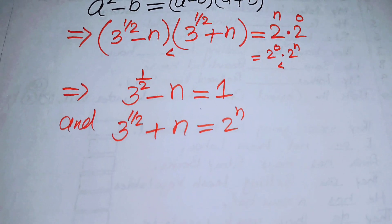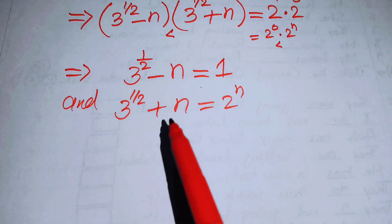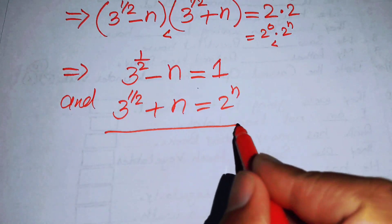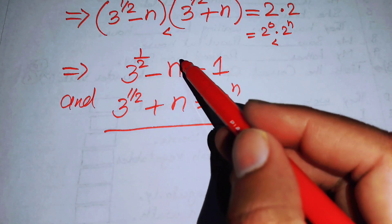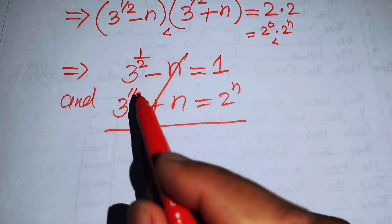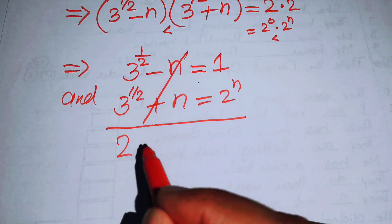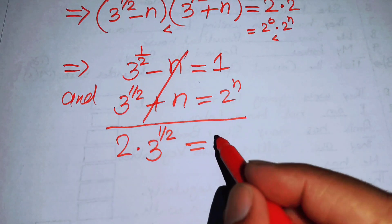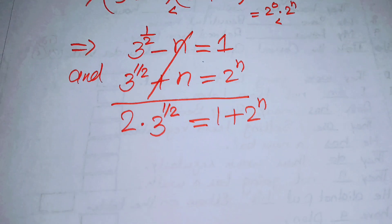To find the value of n, we add the two equations so that the negative and positive n terms cancel. Adding them gives: 2 times 3 to the power of 1/2 equals 1 plus 2 to the power of n.